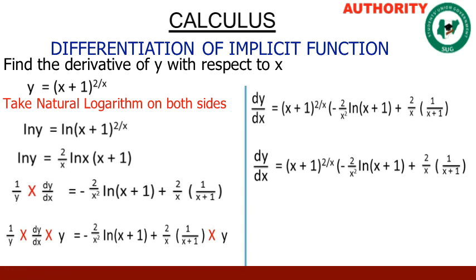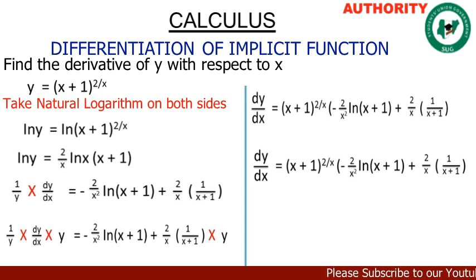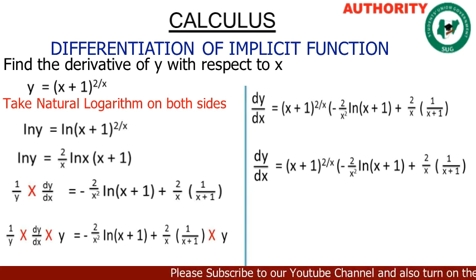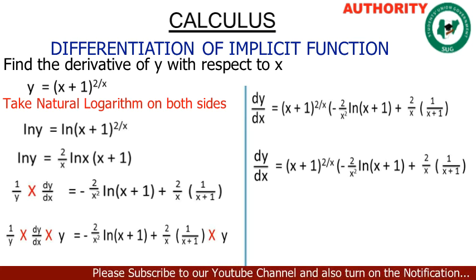Finally, the derivative of the function y = (x+1)^(2/x) with respect to x is: dy/dx = (x+1)^(2/x) · [−(2/x²)·ln(x+1) + (2/x)·(1/(x+1))].